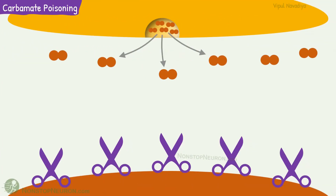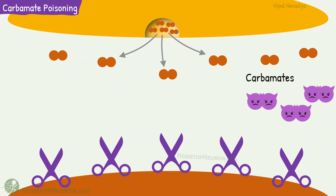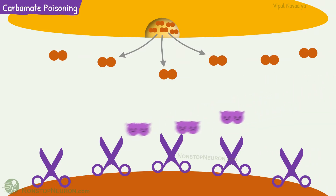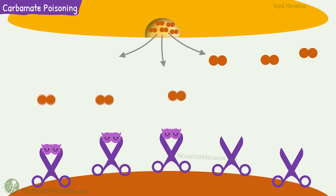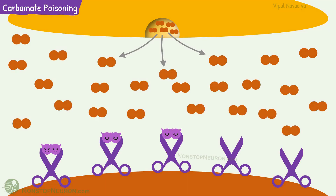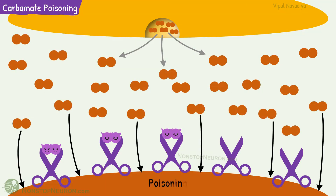Now let's see the scenario with carbamate poisoning. Here come the carbamates — they occupy both sites of the enzyme. So here also, acetylcholine will not get degraded; its concentration will increase and cause poisoning.